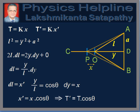Therefore, tension in spring OC is T equal to KX, and tensions in springs OA and OB are T dash equal to KX dash. To establish the relation between T and T dash, we proceed as follows. In the figure, D is the midpoint of AB. In triangle OAD, let OD equal to Y, OA equal to L, and AD equal to A.